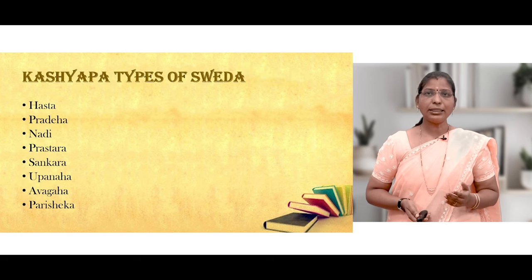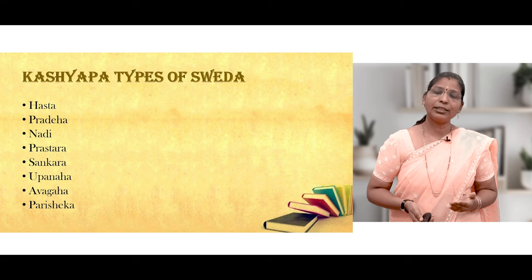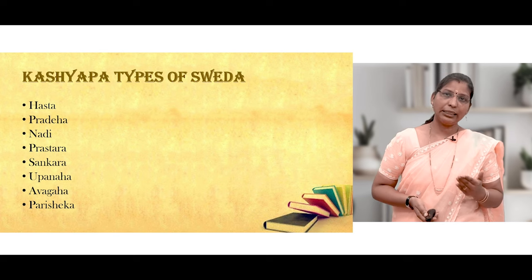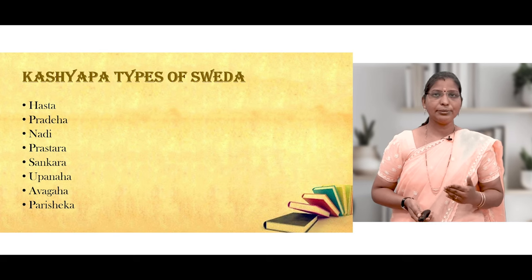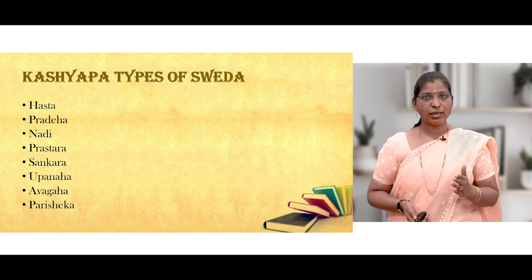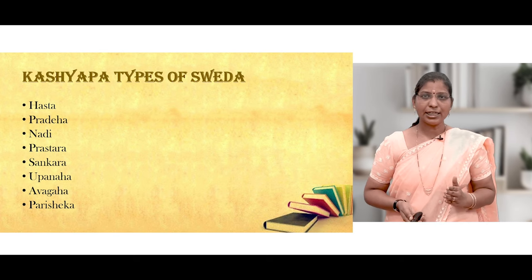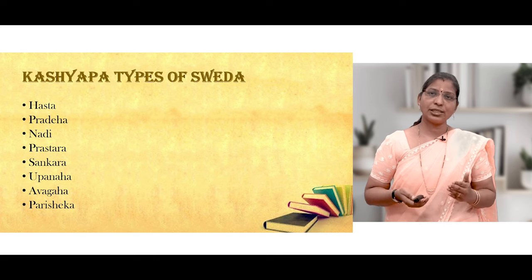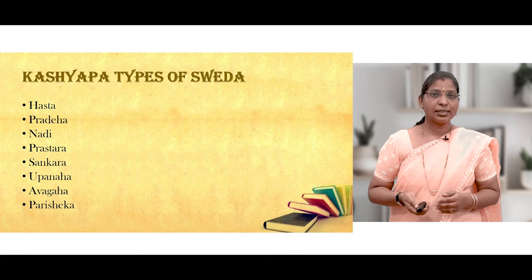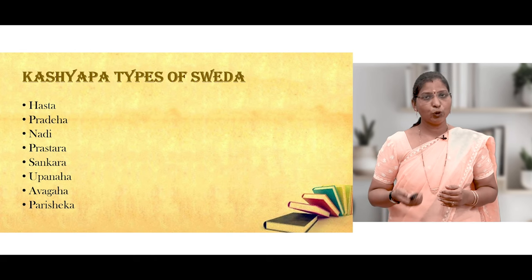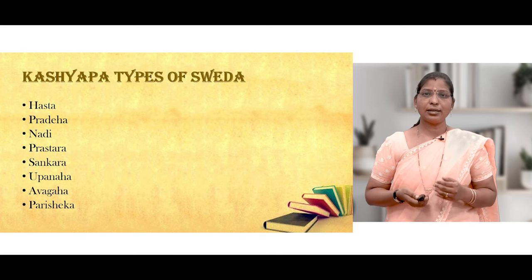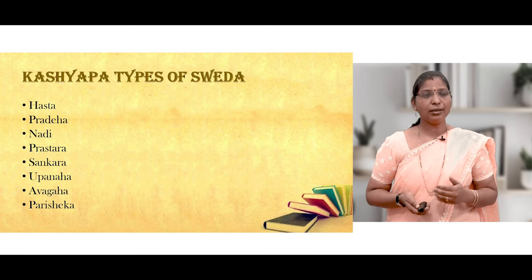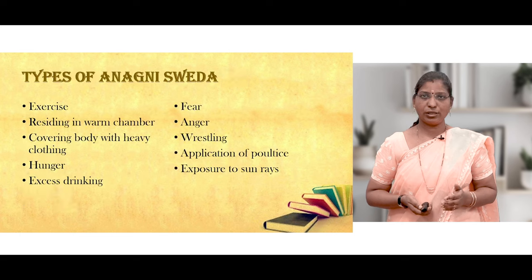Kasyapa further divided Swedana into eight types: Hastasweda, Pradehasweda, Nadi Sweda, Prastharasweda, Sankarasweda, Upanahasweda, Avagahasweda, and Parishekasweda.